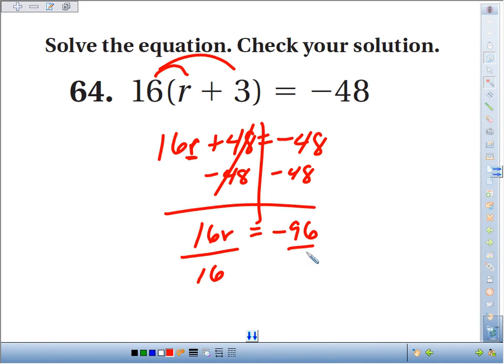To get rid of the times 16, we'll divide by 16, and we get r equals negative divided by positive is a negative, and 96 divided by 16 is 6.